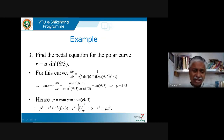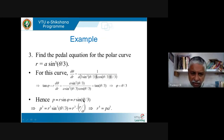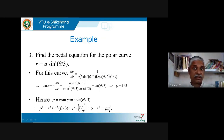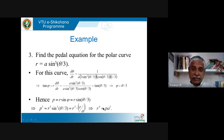Many times you want to eliminate θ from the final answer. So cube both sides: p³ = r³·sin³(θ/3). But sin³(θ/3) = r/a from the original equation. Substituting, p³ = r³·(r/a) = r⁴/a, which gives r⁴ = a·p³. This is the pedal equation with no θ — only r and p. This form is preferred by examiners.